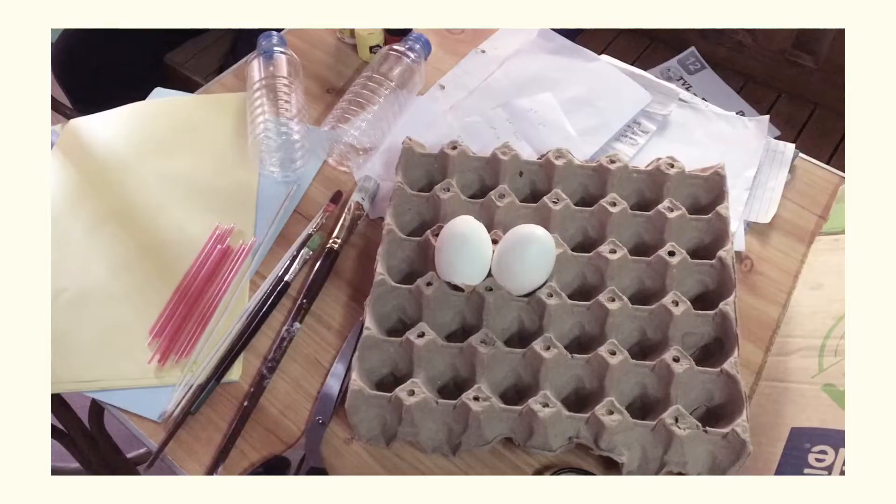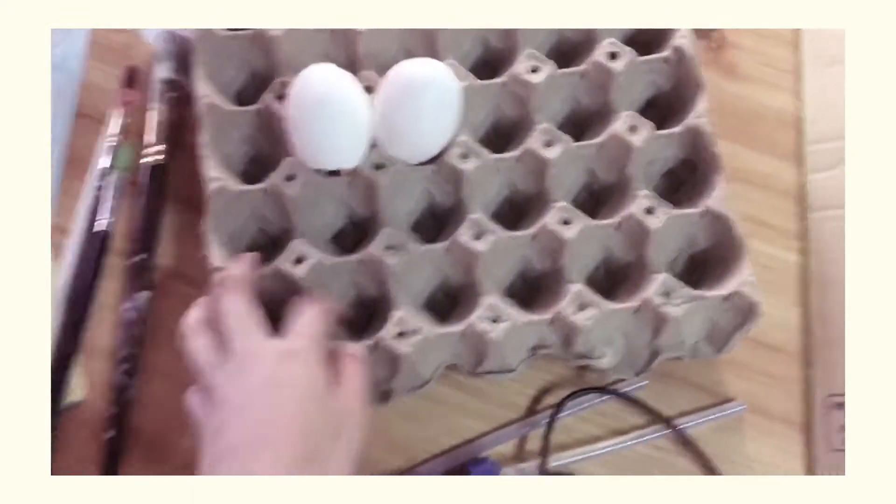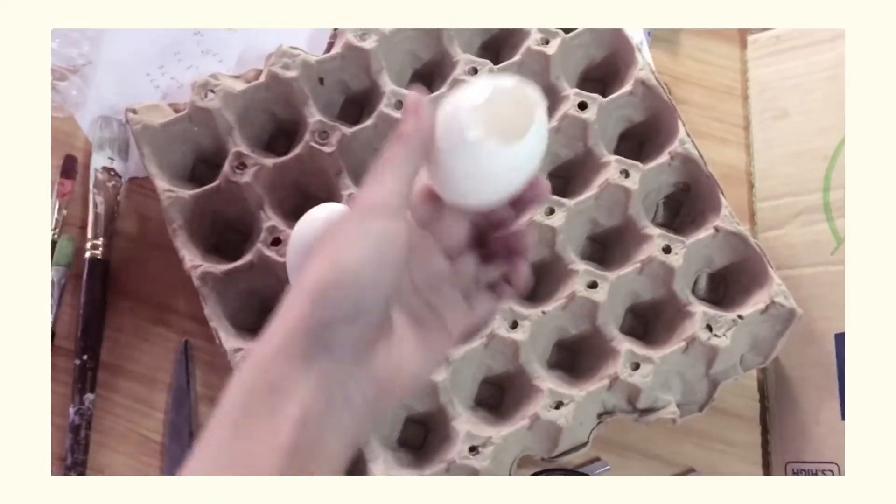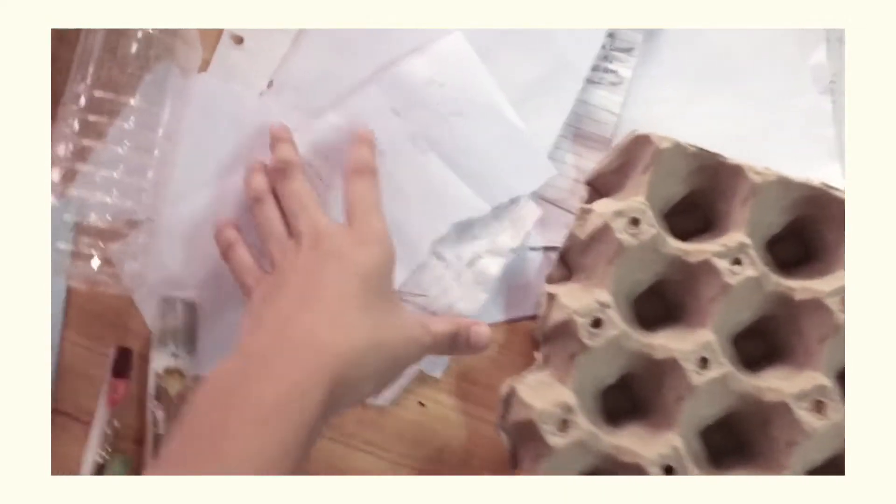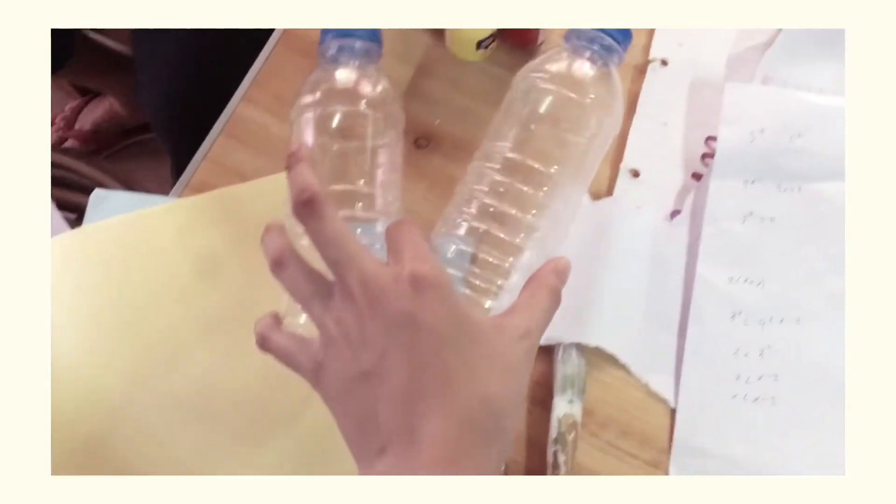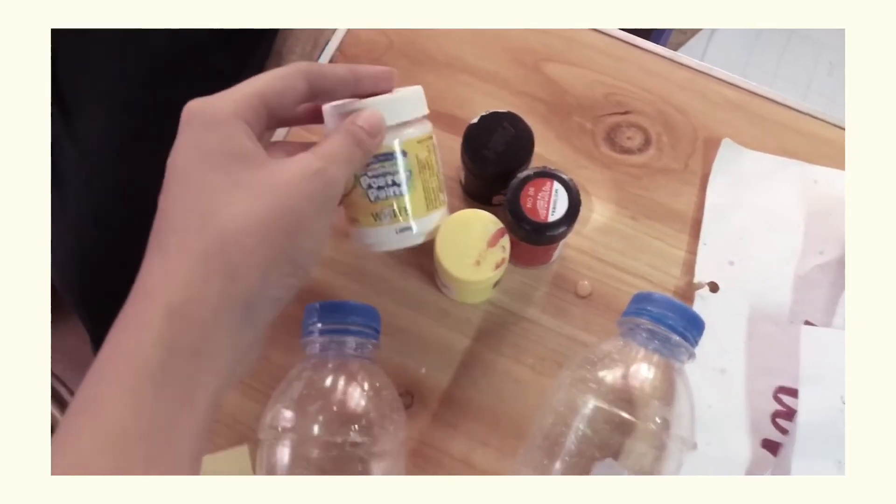So here are the things that I used: some old carton box, an egg tray and two eggshells, some scratch papers or used papers, two plastic bottles, coloring paints, and construction papers.